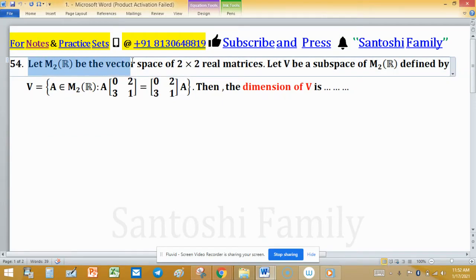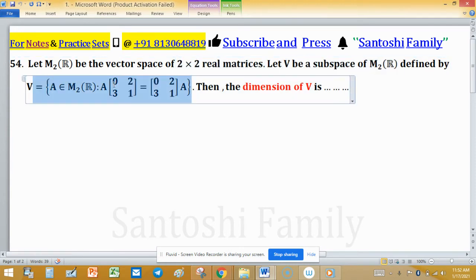Let M₂(ℝ) be the vector space of 2 × 2 real matrices. Let V be a subspace of M₂(ℝ) defined by this set. Then the dimension of V is...